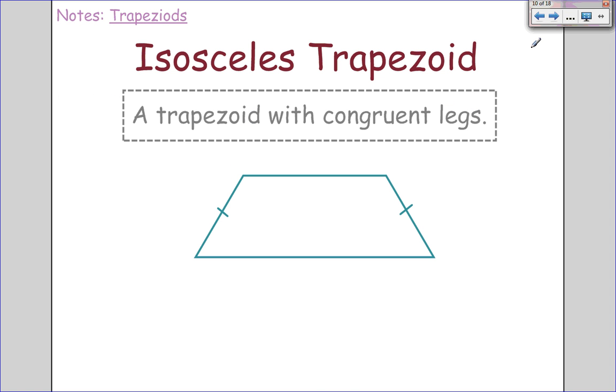Finally, let's look at isosceles trapezoids. An isosceles trapezoid is a trapezoid that has congruent legs. So the bases aren't congruent, but the legs are congruent to each other. The bases are still parallel, and the legs are the same.